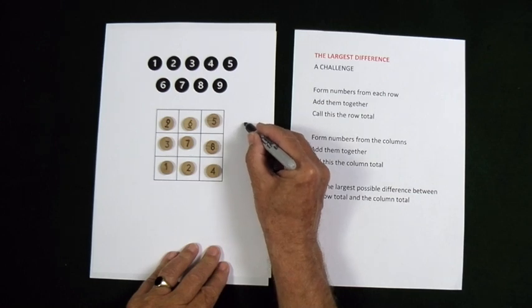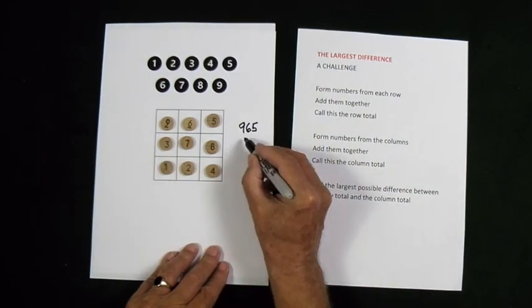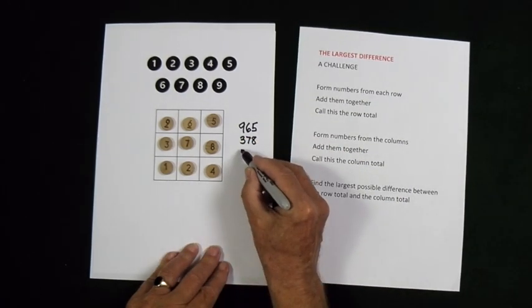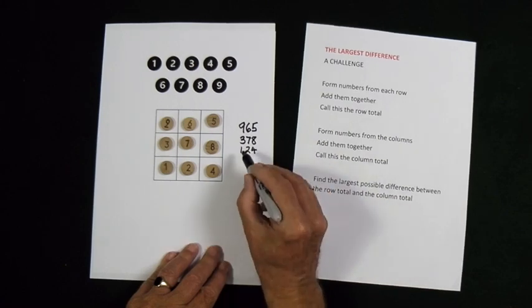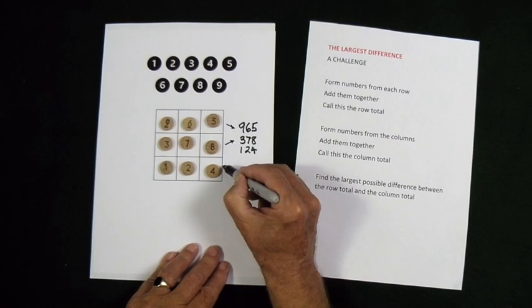And this one here is 965. Using these digits, I get the number 378. Using these digits, I get the number 124. So you can see where I've got them from.